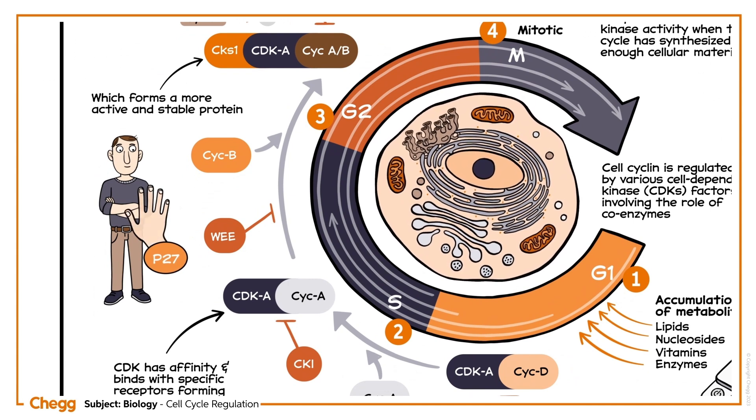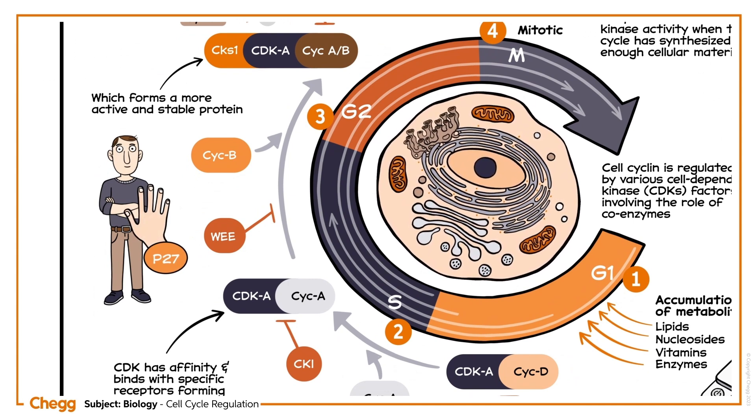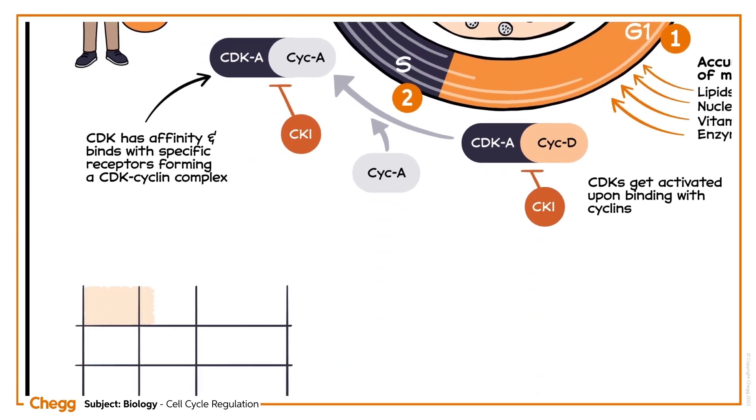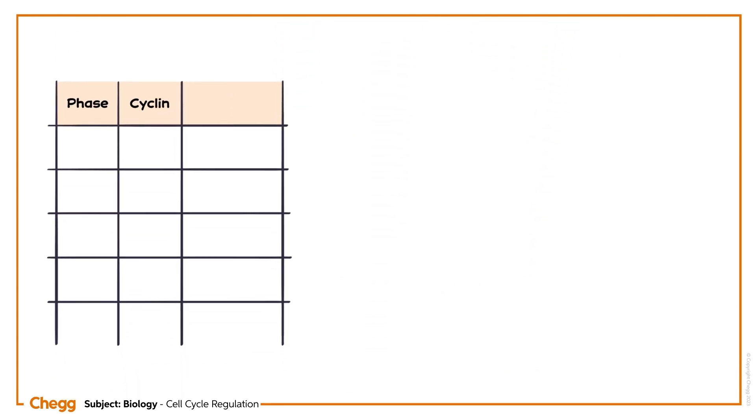P27 proteins regulate the inhibition of kinase in humans. Now, let's learn about a few CDKs involved in the cell cycle during various phases.